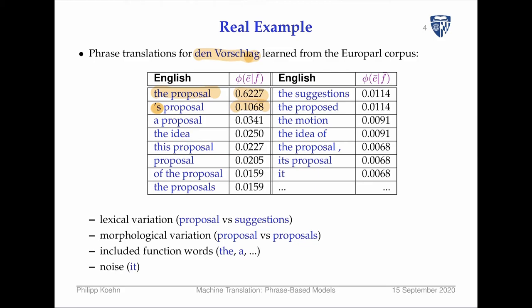The separated genitive affix gives 'someone's proposal' at still 10% probability — proposals often belong to someone. Then 'a proposal,' which is not quite correct given that this is a definite article and 'a' is indefinite. Then there's semantic variation: 'idea,' plurals like 'proposals,' genitive forms, 'the motion,' 'the suggestion.'